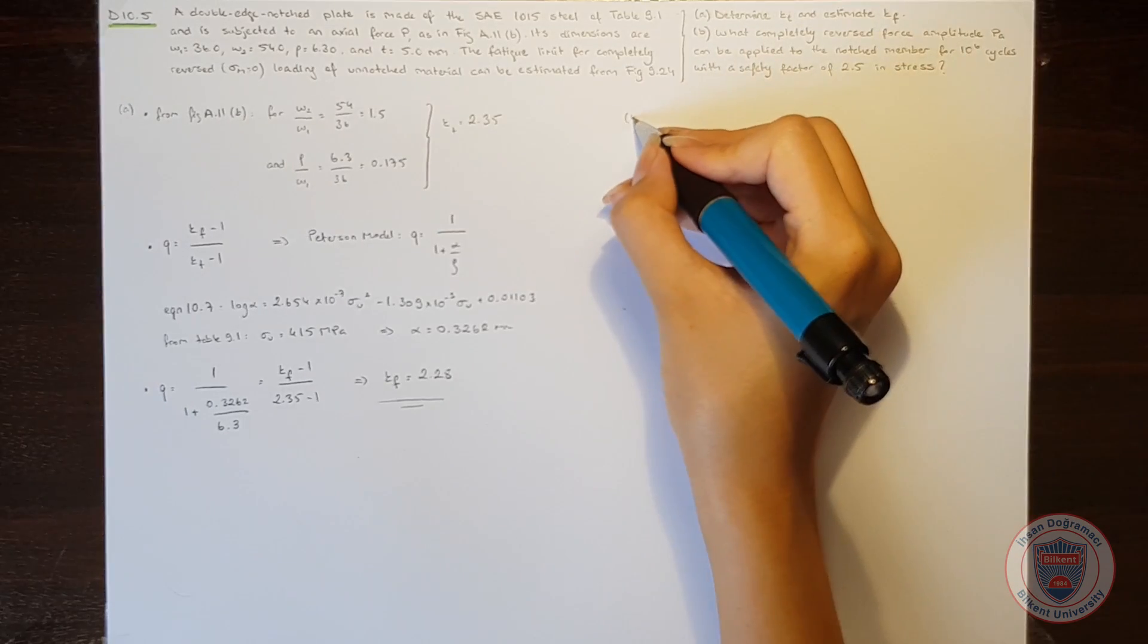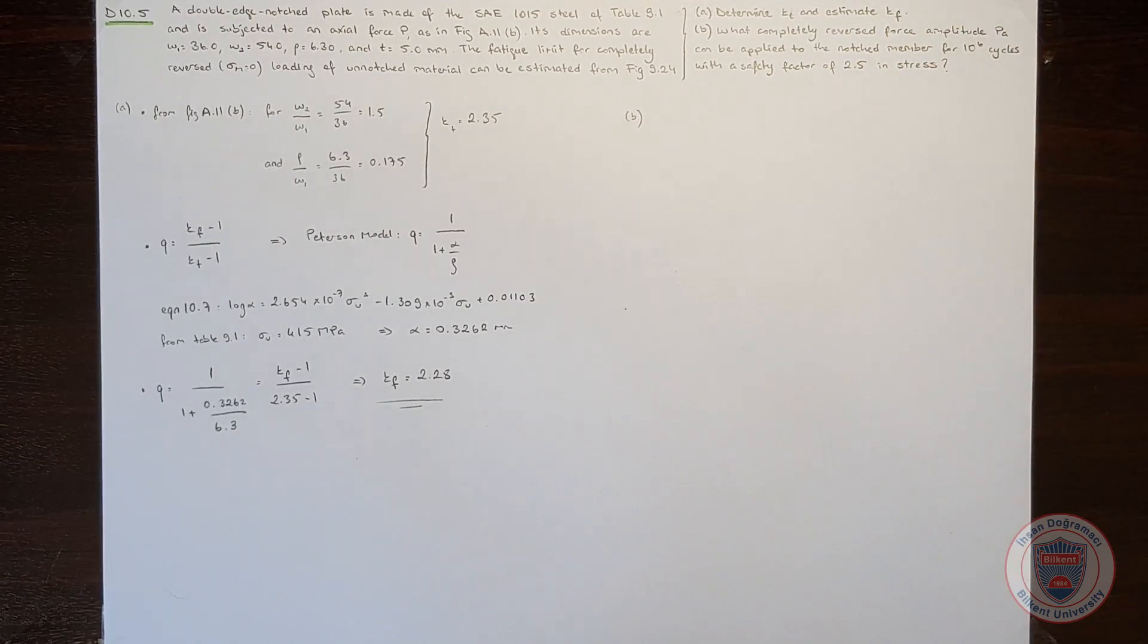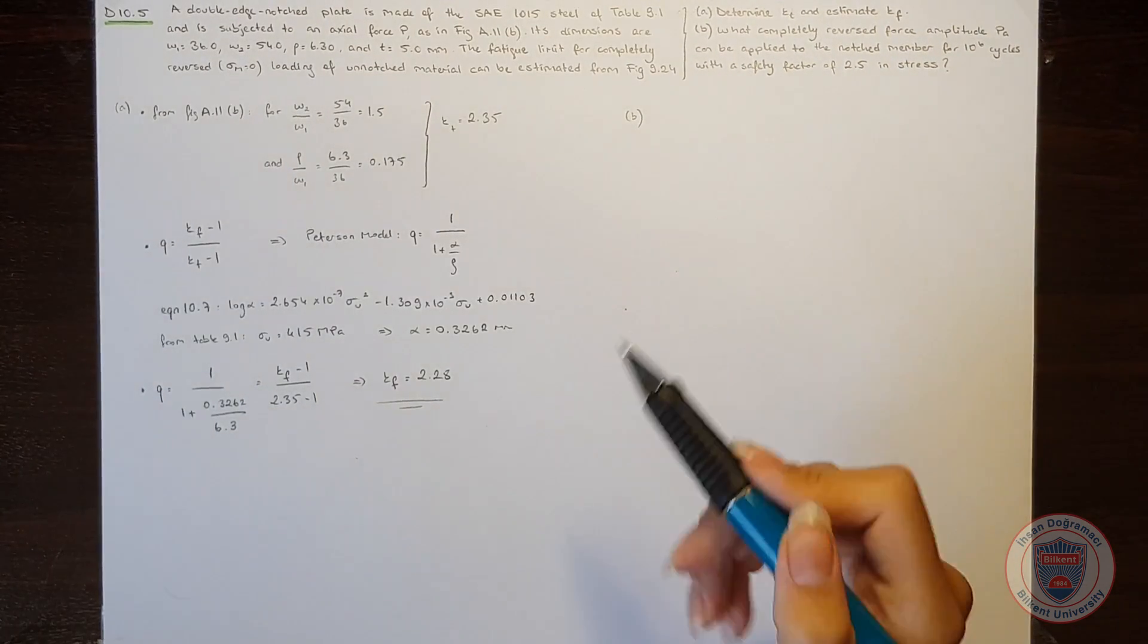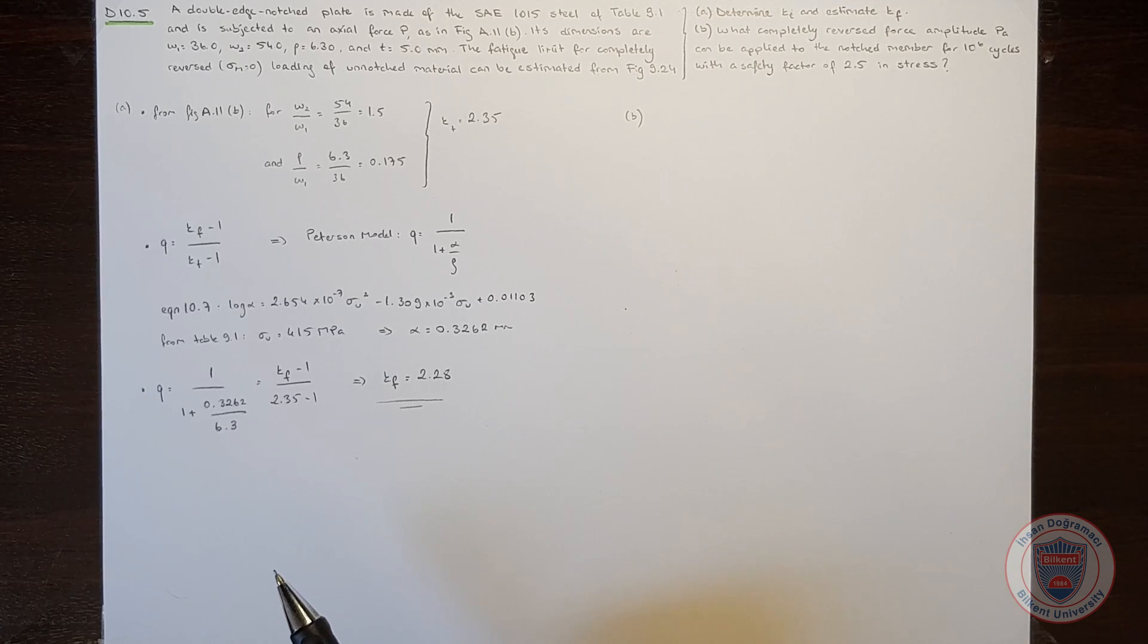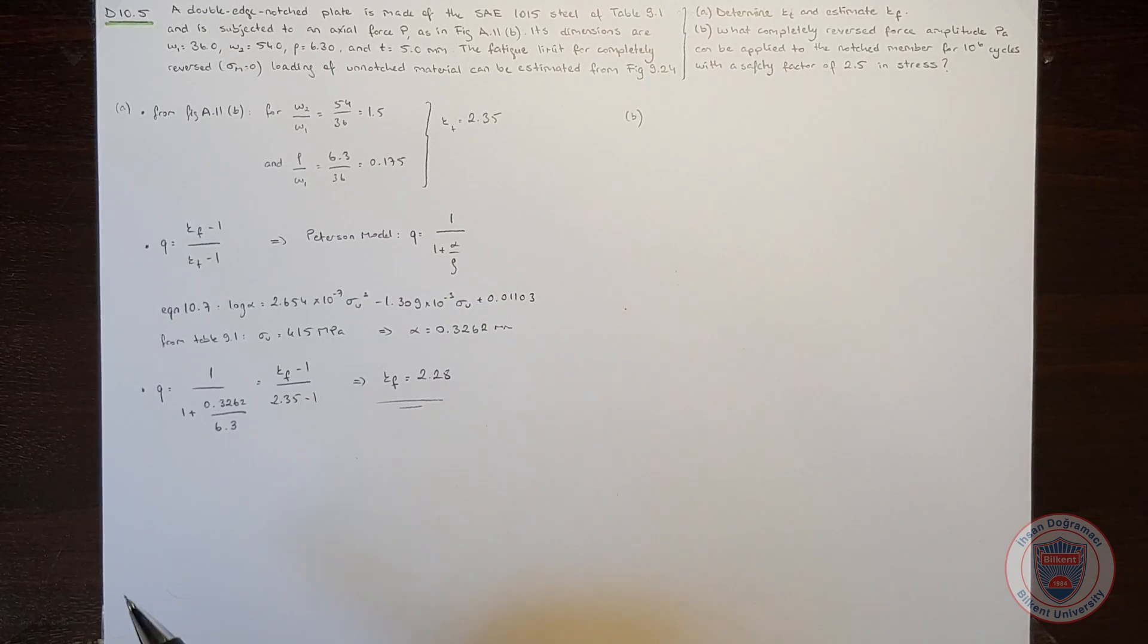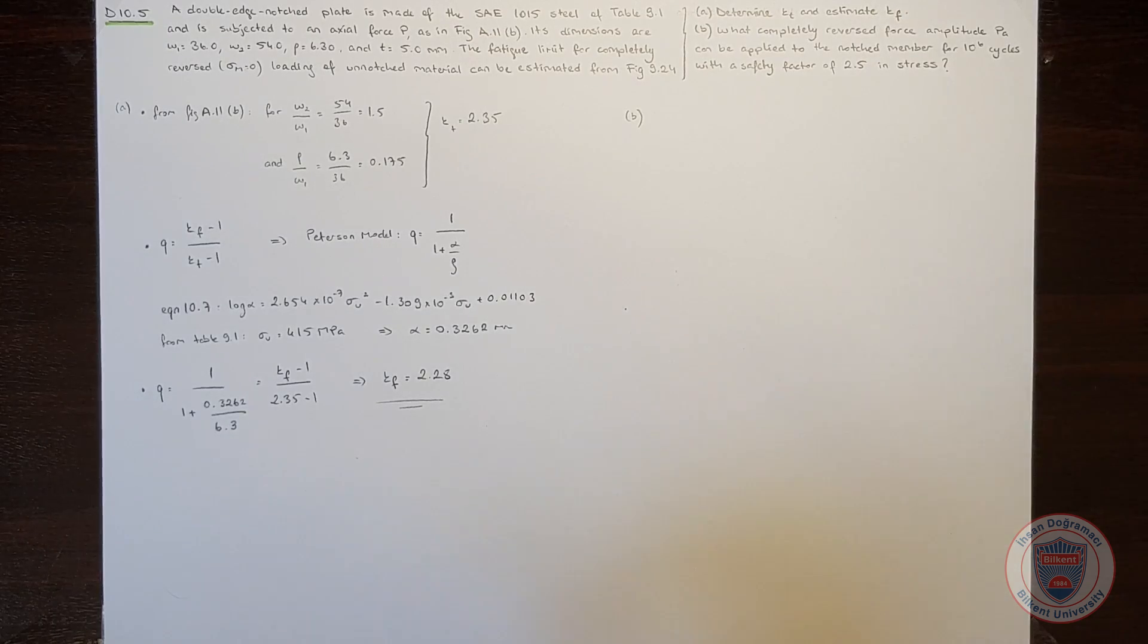Now we can move to part B. In part B, our goal is to find the completely reversed force amplitude, Pa, that can be applied to the notch member for 10 to the power of 6 cycles. And the safety factor will be 2.5 in stress.